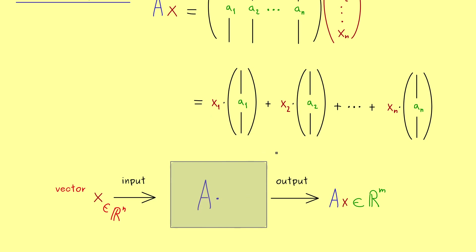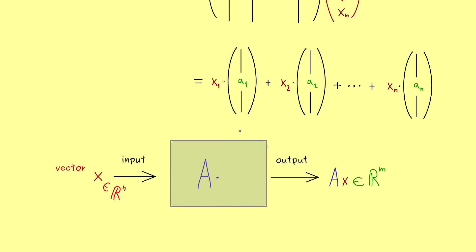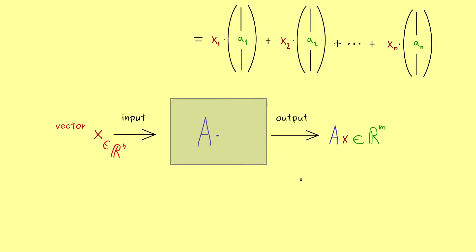Indeed, I would say, this is very important to remember: Ax is always a linear combination of the columns of A. On the other hand, such a machine here, where we have an input and an output, we already know in mathematics. We call it a map.